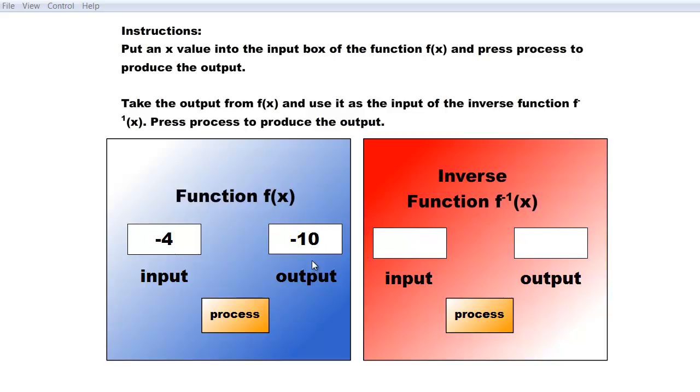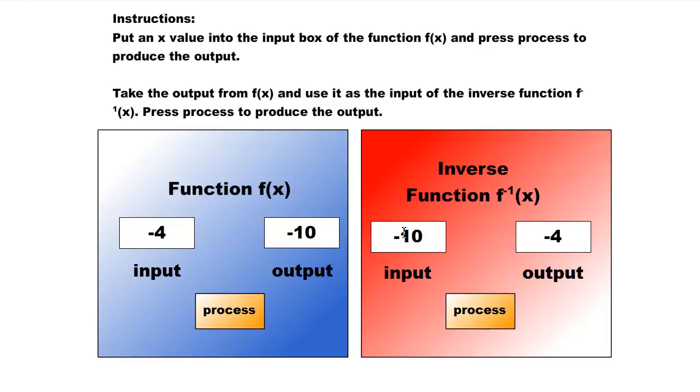What we're doing is examining the function, points on the function, and points that correspond on the inverse function. We're going to take the output of the function and put it into our inverse function and process the output. I can see that in this case, when I put a negative 10 in, I got a negative 4 as an output.